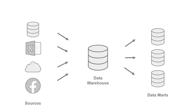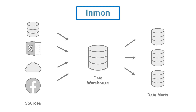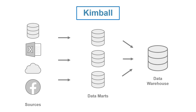In the case of Inmon, you've got a bunch of different sources from a variety of places, and you're centralizing them inside the enterprise data warehouse. You may take that downstream to data marts a little later. Kimball is kind of the reverse — the bottoms-up approach. You bring sources into business-unit-focused data marts, like for operations or HR, and then you may take them to the data warehouse later.